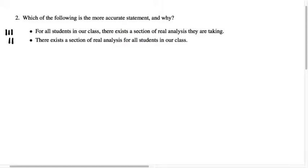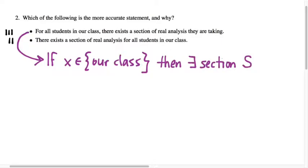So how I would do that is I would take the first statement, for all students in our class, there exists a section of real analysis, and just turn it into an element statement. If x is an element of our class, so x could be you, right? If x is an element of our class, then there exists a section of real analysis, S, such that x is in S.